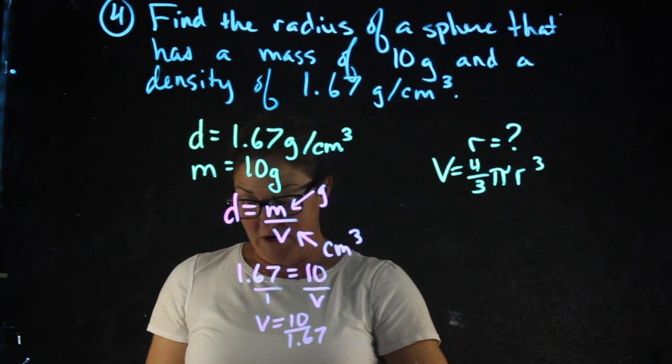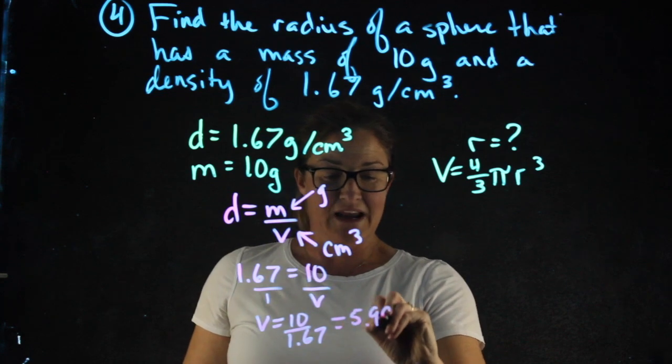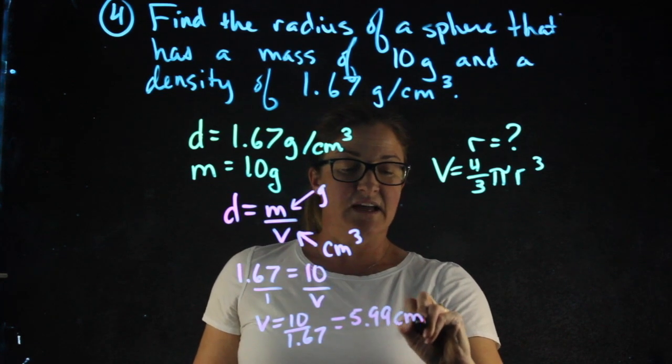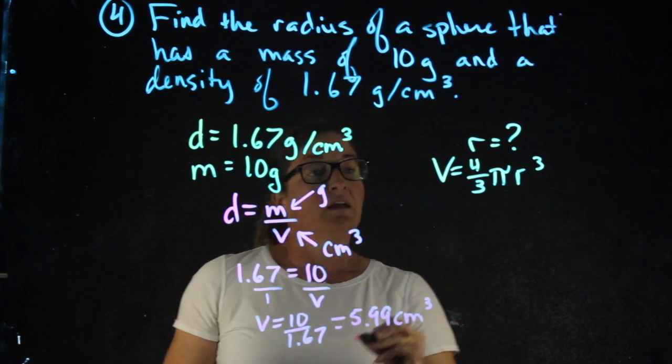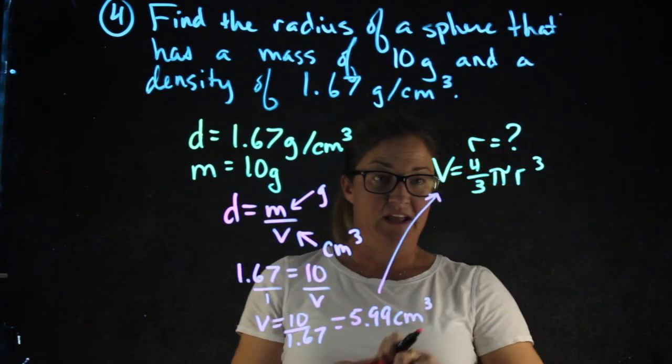10 divided by 1.67 gives me 5.99. This is units of centimeter cubed. Now that I have volume, I can plug it in here, and I'll be able to solve for the radius.